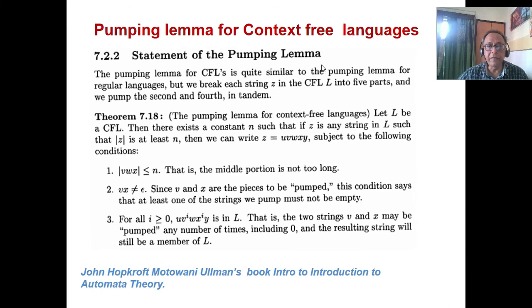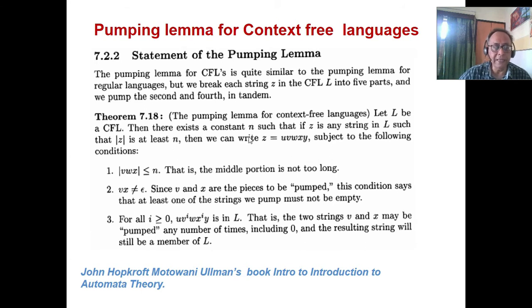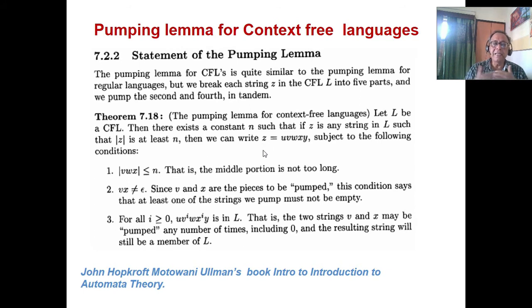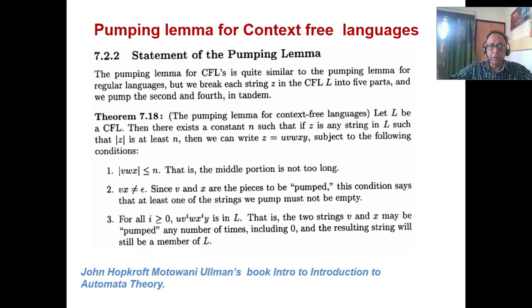Now comes the pumping lemma for context-free languages. This is difficult. Here you have to divide the string into five parts, and the constant here — N in Hopcroft, P in Sipser — requires you to take a sufficiently long string at least N. You can write J as the string, and it is a kind of challenge-and-response type: you have to divide it on your own and prove it. Nobody will divide for you — you take the sufficient long string, and if you prove that this part of the string is not obeying the condition, that is okay.